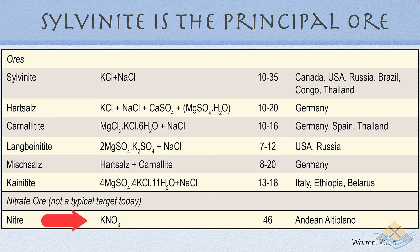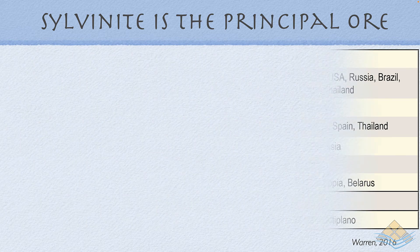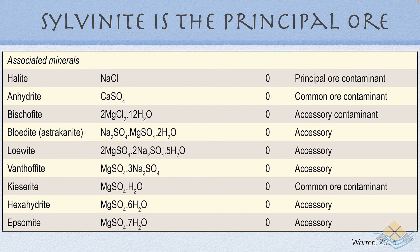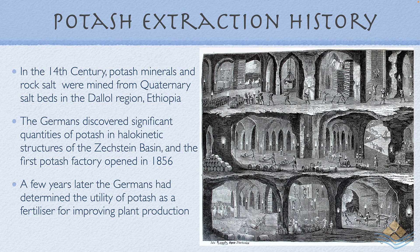There's also potassium nitrate, which is no longer a typical target but was found as Chilean saltpeter and saltpeter in the desert soils of the Atacama Desert. At the beginning of the 1900s it was a major targeted source of potassium nitrate, typically for gunpowder manufacture rather than for fertilizer. Then we have a range of associated minerals with no K2O content that form contaminants and accessories in a variety of targeted ore salt horizons.